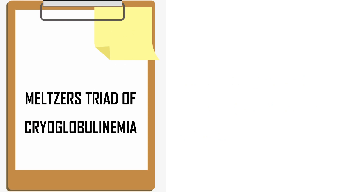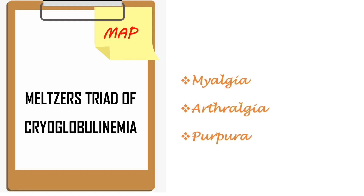Next one: Meltzer's triad of cryoglobulinemia. The clue is Meltzer's MAP. M for myalgia, A for arthralgia, P for purpura. This is very easy — Meltzer's MAP: myalgia, arthralgia, and purpura.